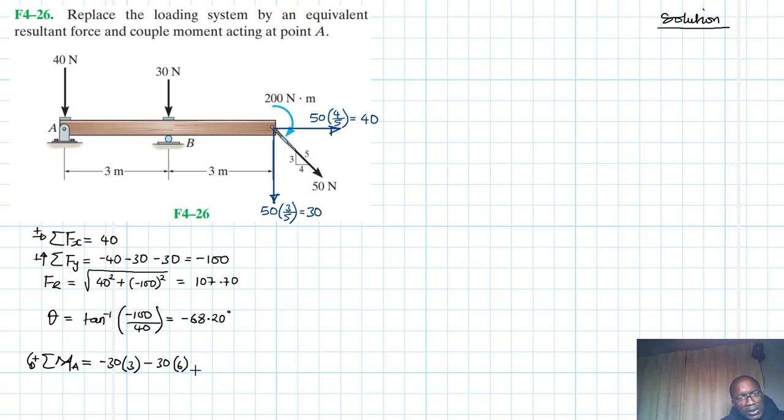And then we have another couple moment here applied at the end point, which is 200. So you can sum it also and it's negative, it's clockwise. Minus 200. 40 will not produce any moment because the lever arm is equal to 0.